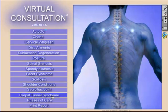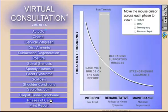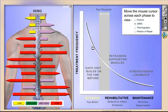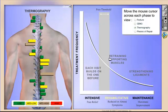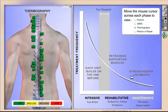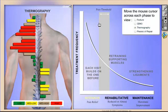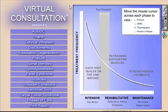Now because every patient wants to know how long their care plan will take, you can use virtual consultation's phases of care feature and it shows the treatment frequency reduced as the patient progresses through the phases of care. You can even do this for both a static SEMG scan or the thermographic scan.